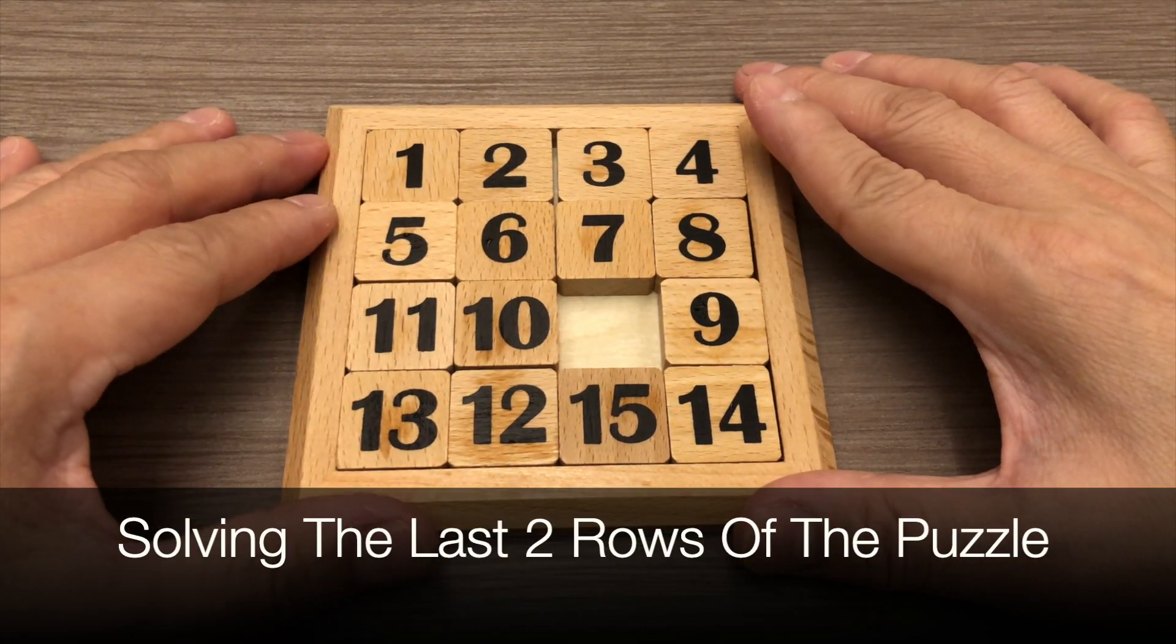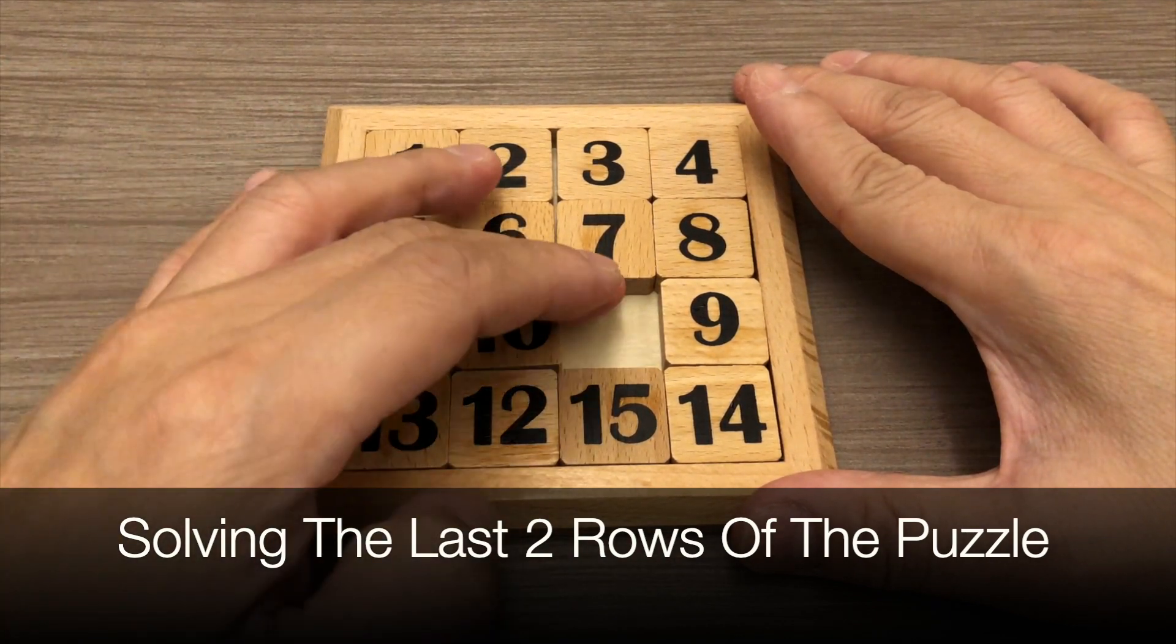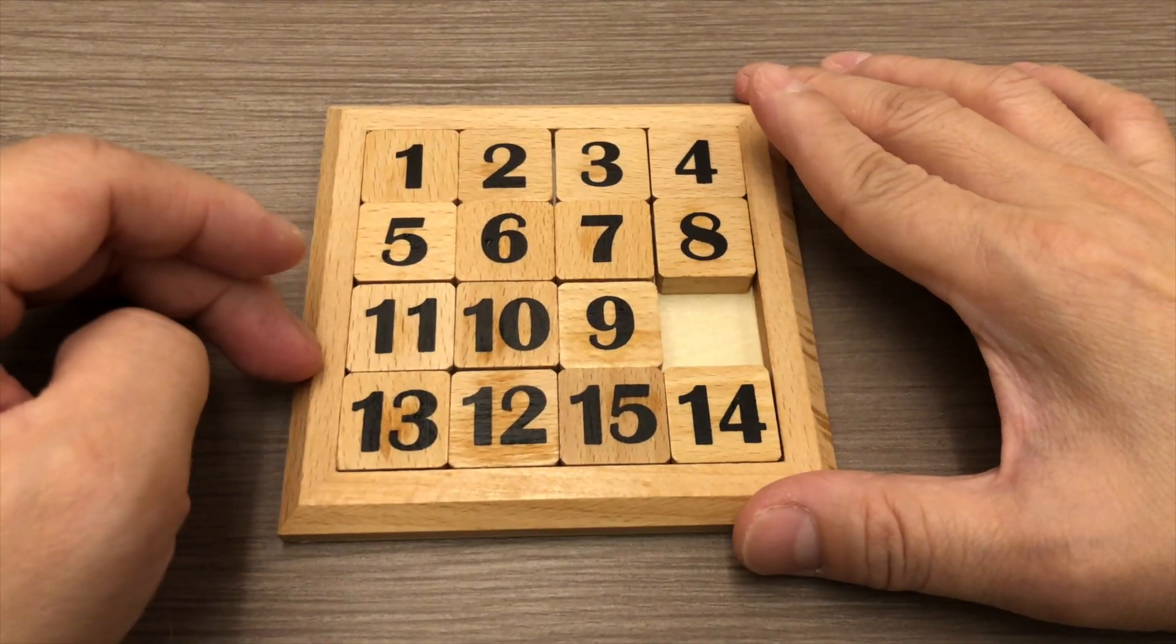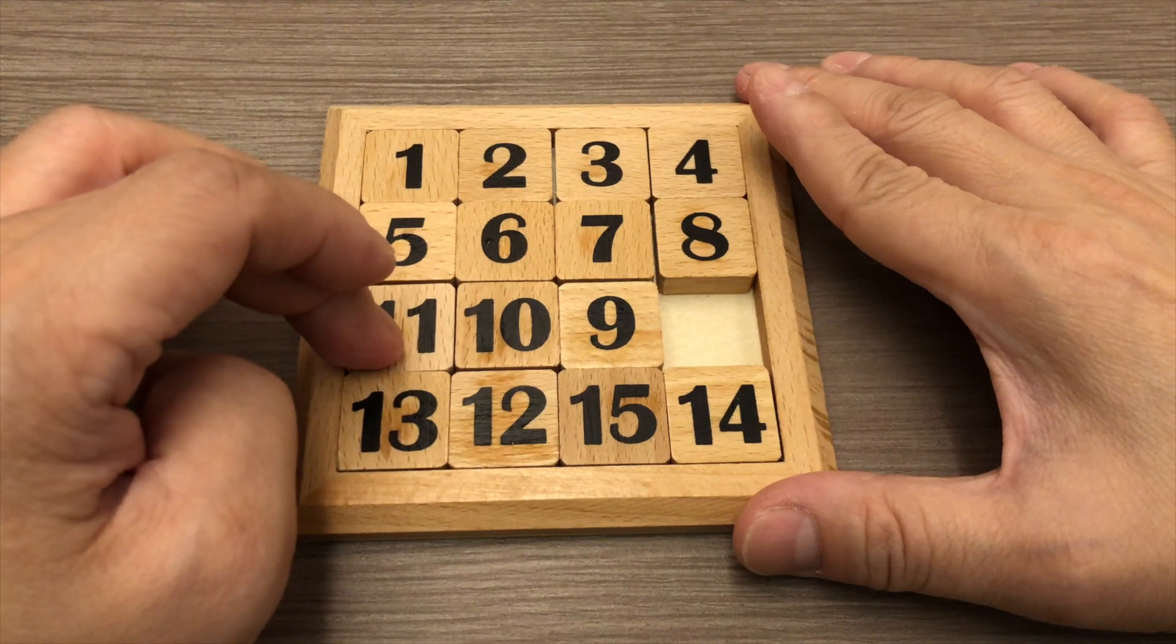For the second part of the puzzle, you have to solve it by column. What I mean is, you have to remember what are the two numbers here. For instance, this is 8 and next will be 9.